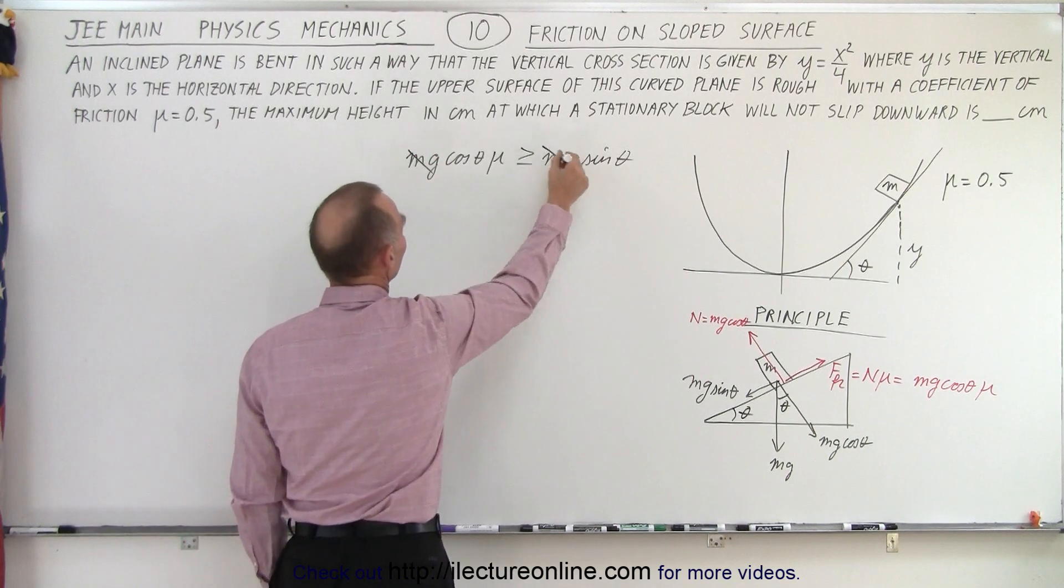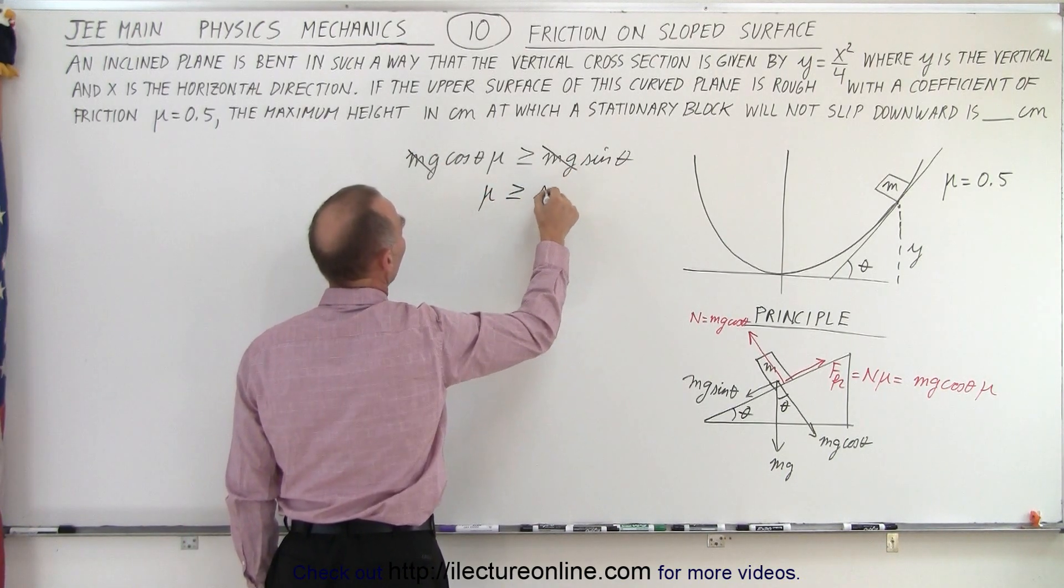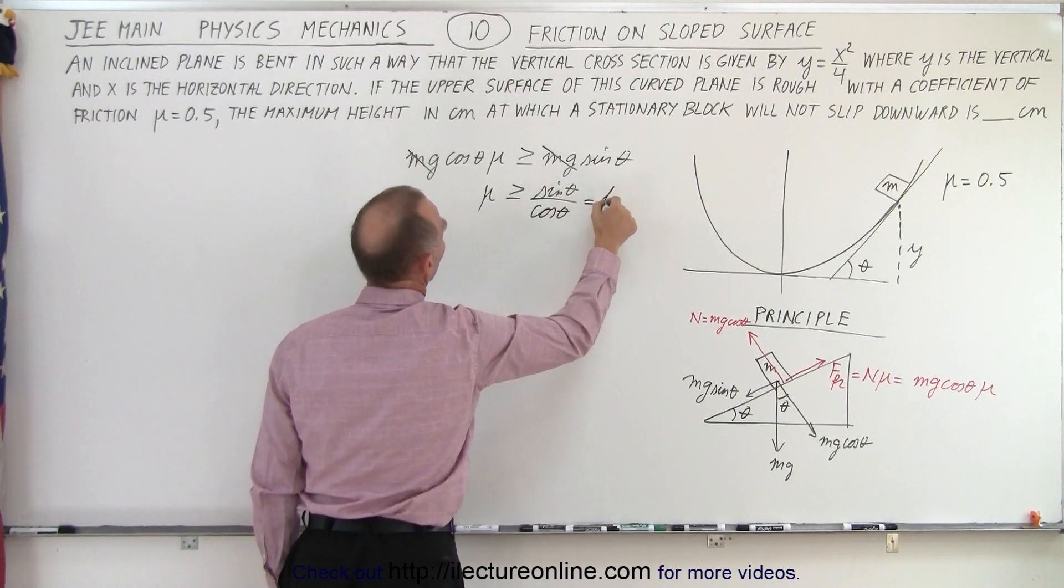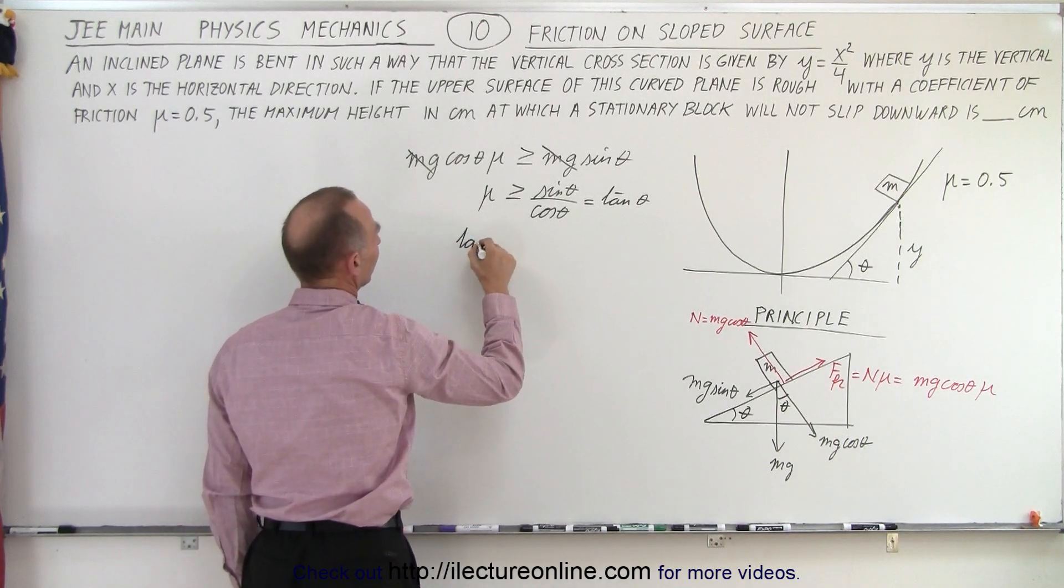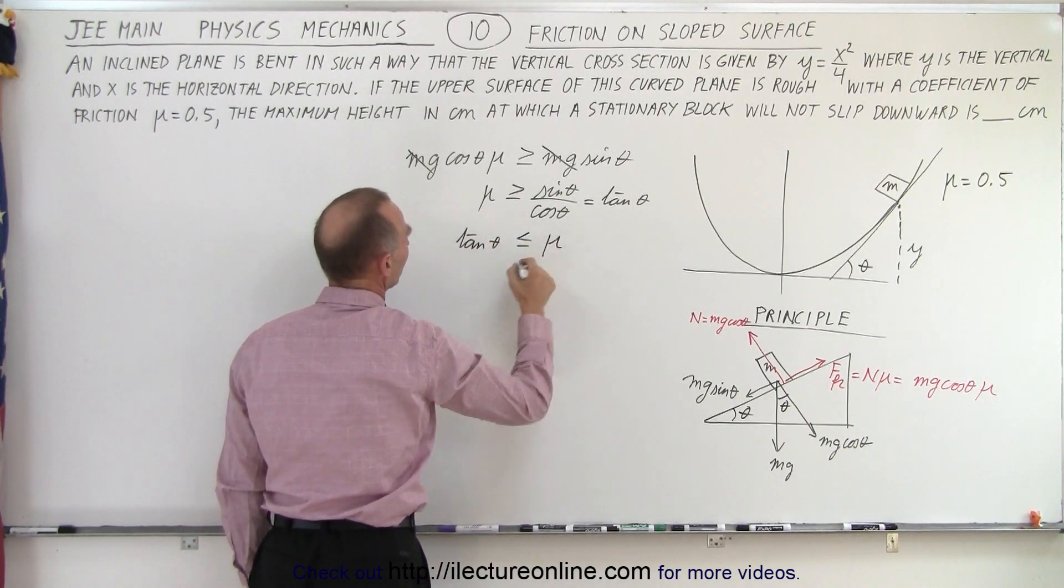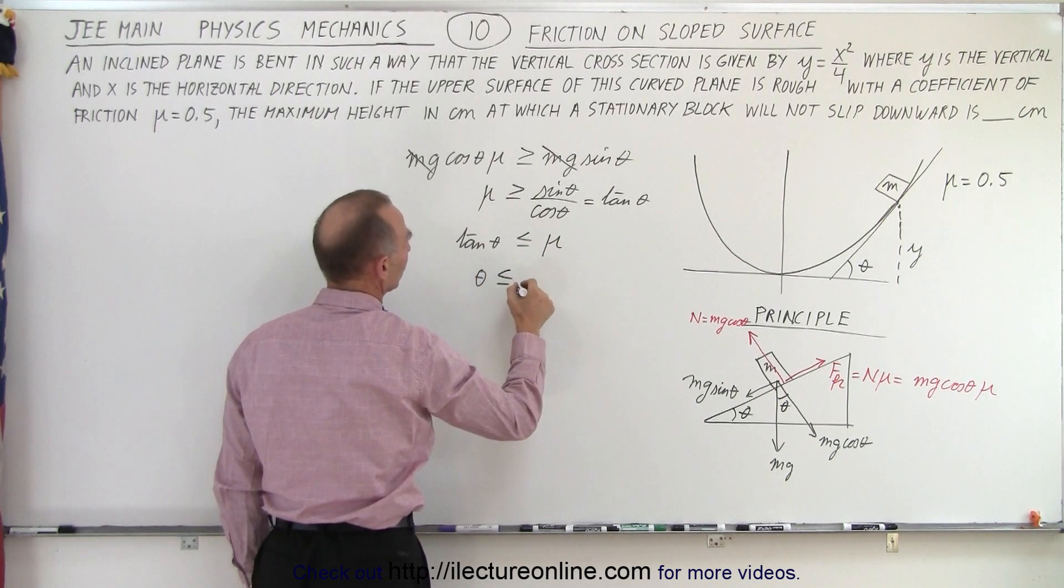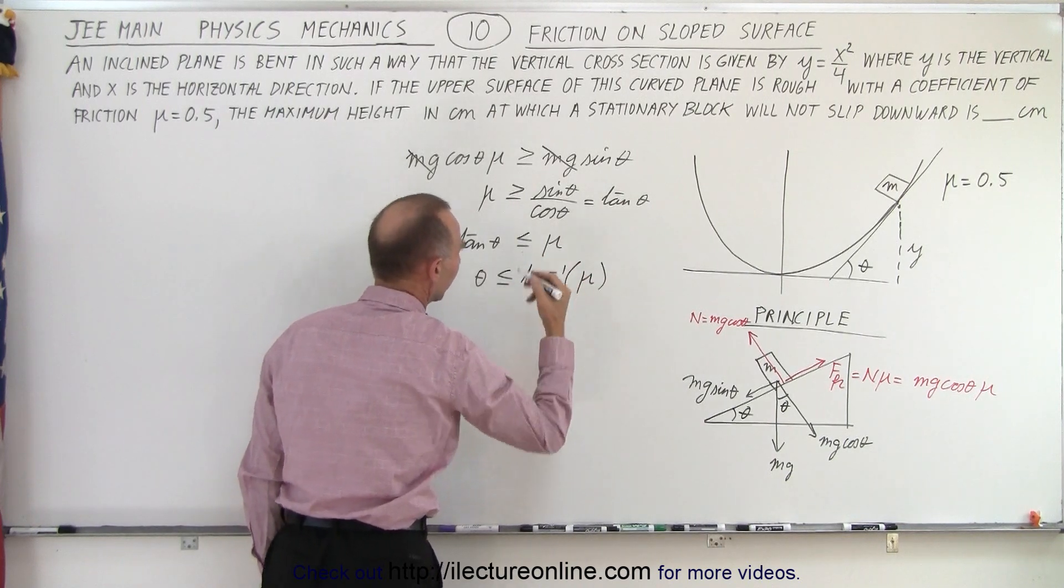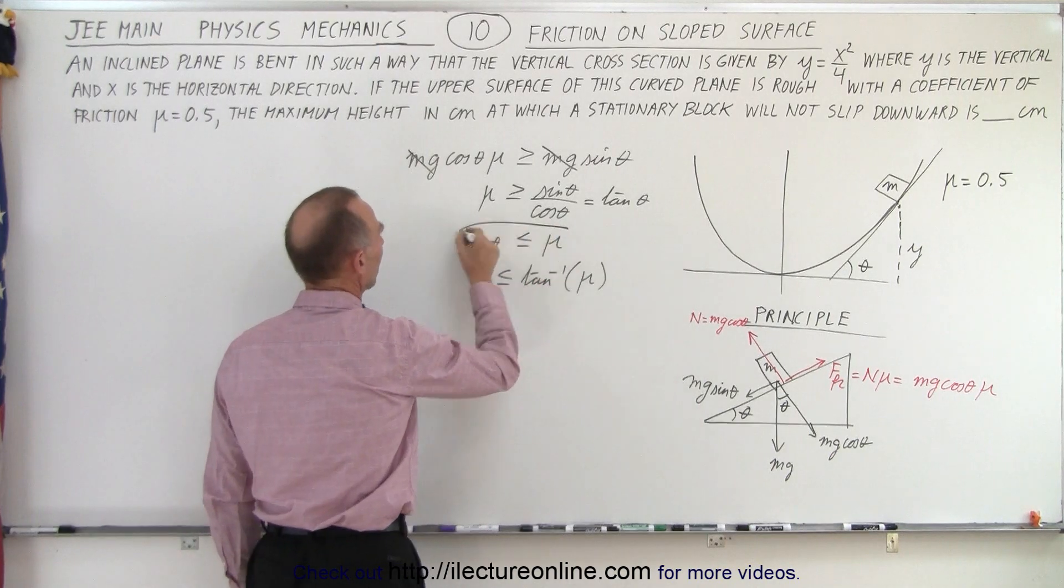On both sides you have mg that cancels out, and now solve it from mu. We get mu must be greater and equal to the sine of theta divided by the cosine of theta, which of course is the tangent of theta. So that means that the tangent of theta must be less than or equal to mu, or theta must be less than equal to the inverse tangent. I don't know if we even need that or not, but anyway, there we go. So that's the angle which it happens. So this is I think where we want to go.